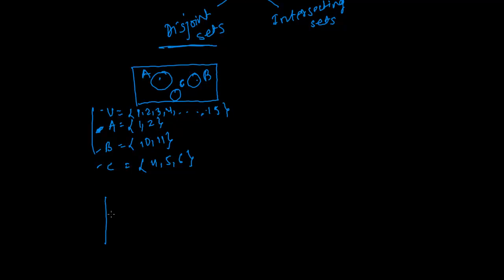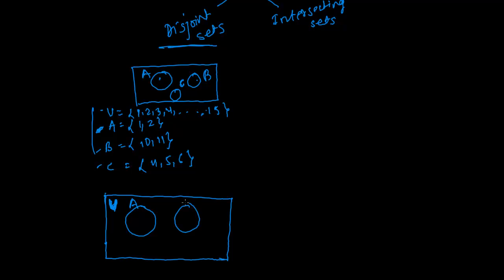Now I am going to put this information into the Venn diagram. As you already know, first we need to draw a rectangle to represent the Venn diagram. This rectangle U represents the universal set including all its elements. Now I draw subset A, and another subset B. I did not overlap or share any section between A and B because there are no elements common between these two — nothing is common between A and B, that's why I represented them separately. Now I draw C independently as well, not attached to B or A, because elements of C are not found in A or B. That is why we call these disjoint sets.